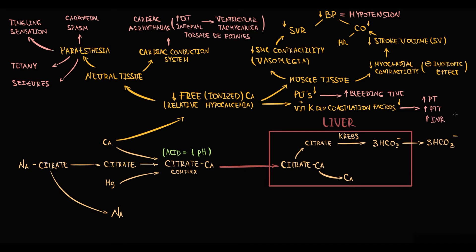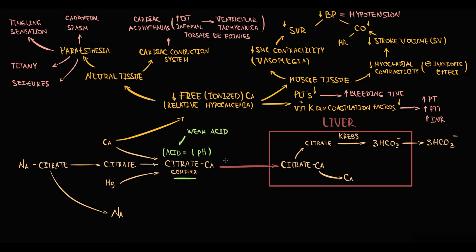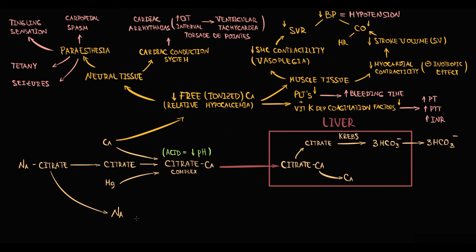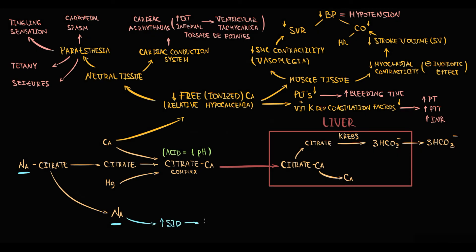Citrate also disrupts pH homeostasis in a somewhat tricky way. Initially, citrate causes transient high anion gap metabolic acidosis that then turns to metabolic alkalosis. To explain this, recall that citrate in plasma is present as a complex with calcium, and citrate-calcium complex is a weak acid. In normal conditions the amount of citrate is not significant, so its acidifying capacity is negligible. However, in massive blood transfusion the amount of citrate-calcium complexes becomes so high that it can cause high anion gap metabolic acidosis, even despite the simultaneous elevation of sodium in the blood.